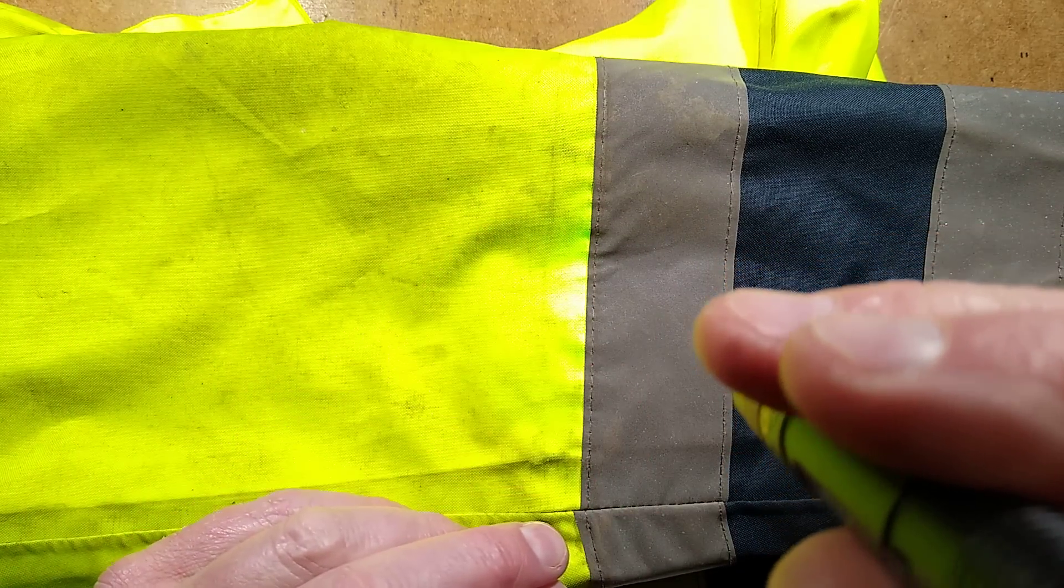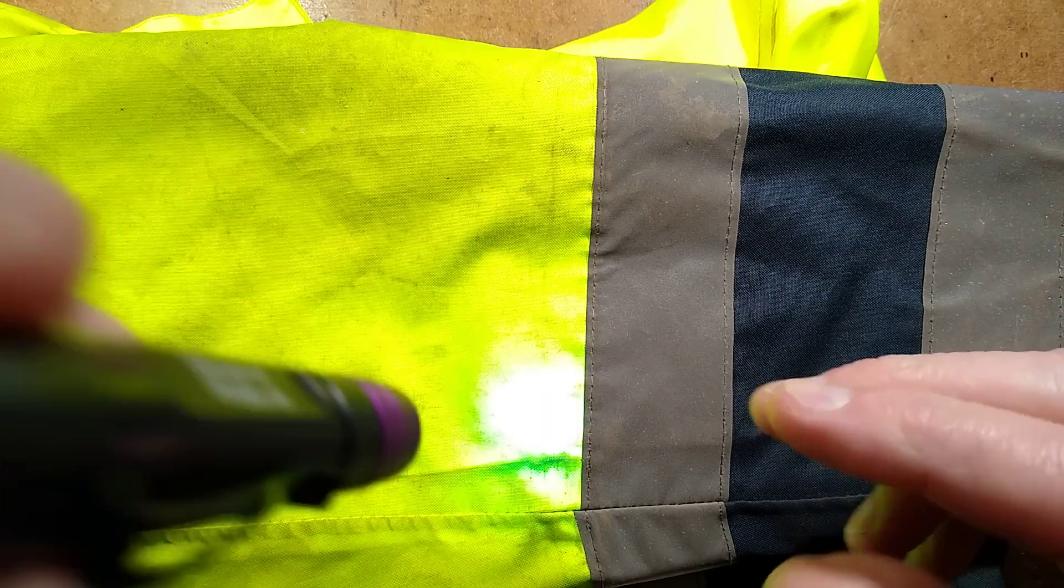But when you shine it on the retroreflective tape, you normally get a deep violet color back. In this case, if I hold this up here and point it straight at the tape, let's try turning the light off and changing the exposure.